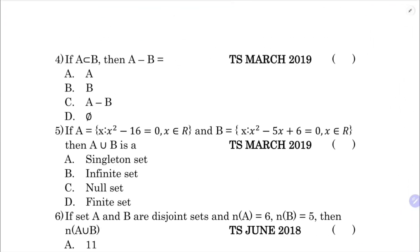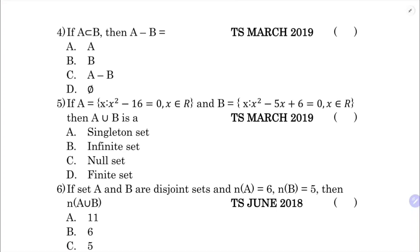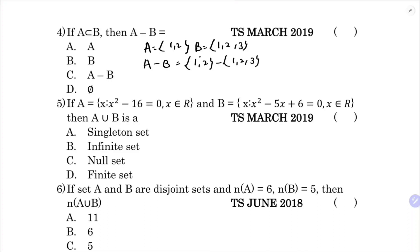Fourth question: if A is a subset of B, find A minus B. Take A = {1, 2} and B = {1, 2, 3}. Calculating A minus B: the common elements cancel out, so nothing is left. The result is a null set, so the correct option is D.